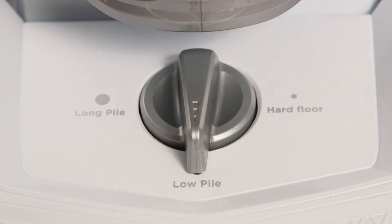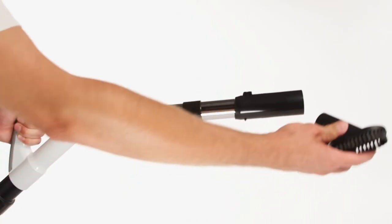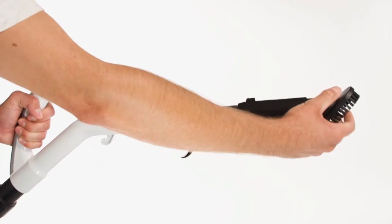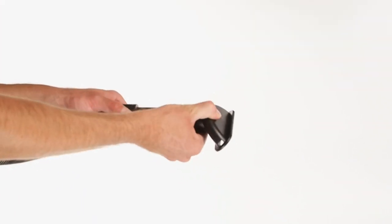Next, select long pile on the floor head. You can now attach the accessories by pushing them firmly onto the end of the handle. Alternatively, you can attach the accessories straight onto the hose.